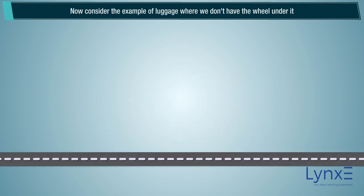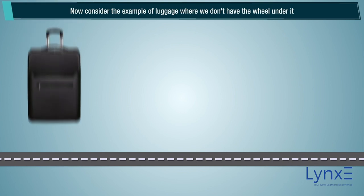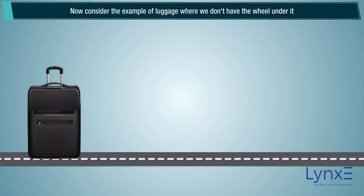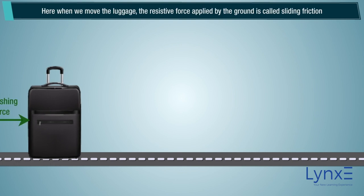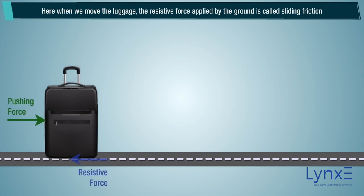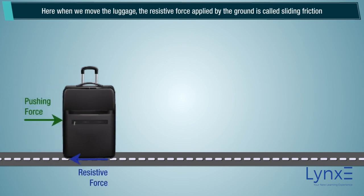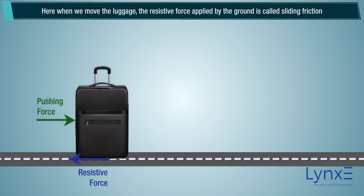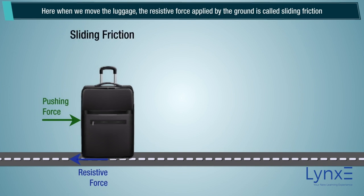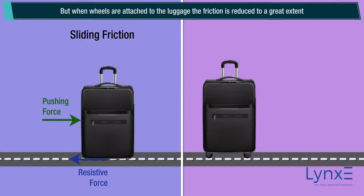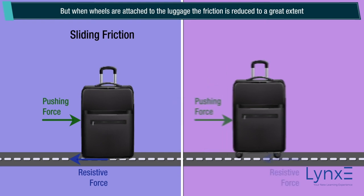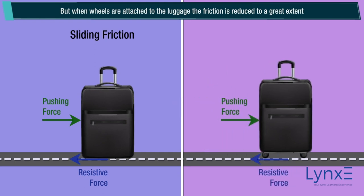Now, consider the example of luggage where we don't have a wheel under it. Here, when we move the luggage, the resistive force applied by the ground is called sliding friction. But when wheels are attached to the luggage, the friction is reduced to a great extent.